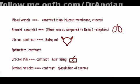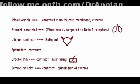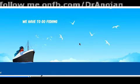This can also be remembered by the 'point and shoot' mnemonic: 'point' is for parasympathetic, meaning parasympathetic results in erection; 'shoot' is for sympathetic, meaning shooting like a gun, which refers to ejaculation. So sympathetic stimulation results in ejaculation through seminal vesicle contraction.